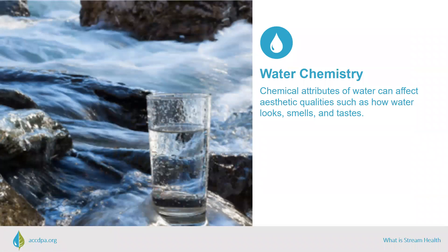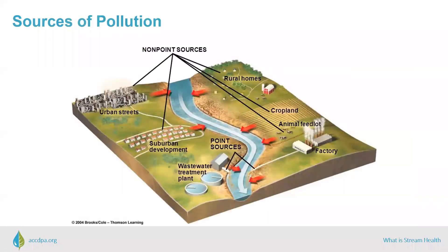To dive deeper into stream health, you have to look at the chemical and biological aspects of the stream. Scientists use chemical and biological parameters to evaluate water quality in the stream and its ability to support a thriving aquatic community. Since the chemical quality of water is important to the health of humans as well as plants and animals, it's necessary to assess chemical attributes of water. The chemical properties of water can affect aesthetic qualities such as how water looks, smells, or tastes, and can also affect its toxicity and whether or not it's safe to use. It's important to note that the appearance of water can often be deceiving — crystal clear water can contain unseen chemicals, bacteria, and metal contaminants.